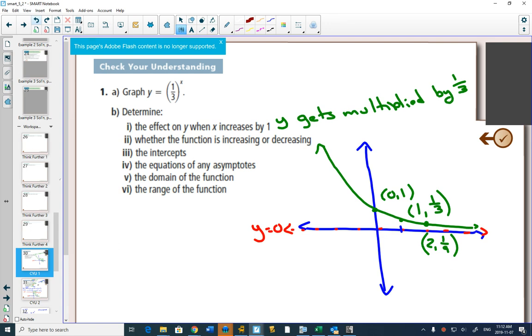But you can really see it in the equation. Every time I increase x by 1 compared to the previous one, you're multiplying by another 1 third. So each time x increases by 1, y gets multiplied by another 1 third. Is this one increasing or decreasing? This one is decreasing.